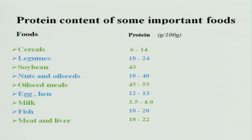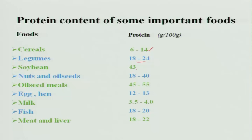Looking at the protein content of some foods: cereals provide 6 to 14 grams per 100 grams, and legumes provide 18 to 24 grams. When combining cereals and legumes you cannot combine them 1 to 1, because the quantity of protein in legumes is much more than in cereals; they can be combined in the ratio of 4 to 1. Soybean contains 43 grams per 100 grams — it is the richest source among vegetable sources and is a complete protein. Nuts and oilseeds contain 18 to 40 grams per 100 grams, and oilseed meals contain 45 to 55 grams of protein.